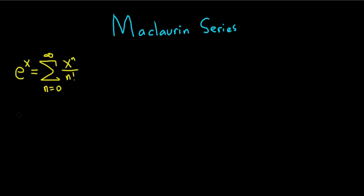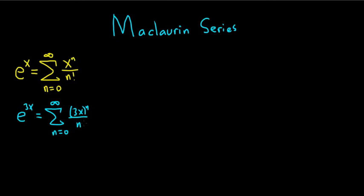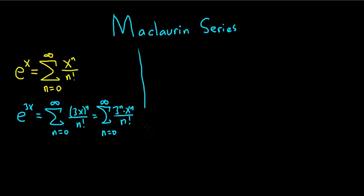So let's say you had to find the Maclaurin series for e to the 3x. All you would do is replace all of your x's with 3x, so you'd have the infinite sum from zero to infinity of (3x) to the n over n factorial. You could simplify this by writing it as the infinite sum as n goes from zero to infinity, raising the 3 to the nth power and x to the nth power. So that's the first one — the Maclaurin series for e to the x is super useful.